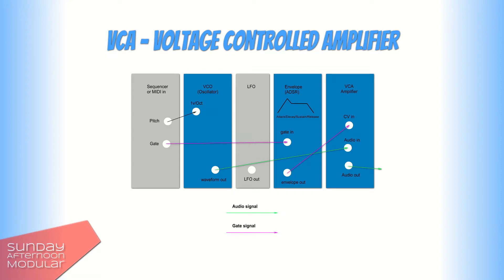We have two signals: one is the tone coming from the oscillator, the other one is the gate signal which we patch to an envelope generator, also referred to as ADSR, because it controls the attack, decay, sustain, and release of the signal. A VCA usually has an audio in and output and a CV input — which means control voltage — which is our second signal here that controls the audio signal.